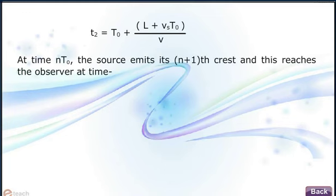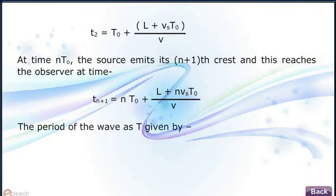At time N T0, the source emits its (N plus 1)th crest and this reaches the observer at time T(N+1) equals N T0 plus (L plus N Vs T0) by v.